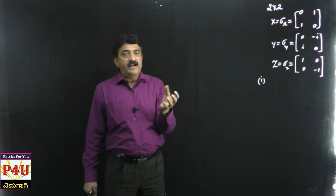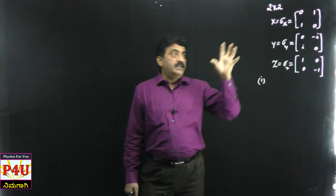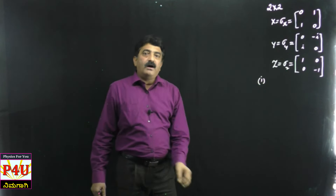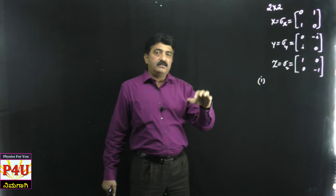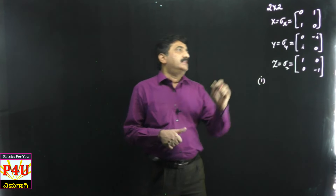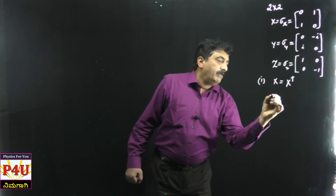Whether we write the Hermitian of X, Y, or Z, we get back the same matrix. They are Hermitian - the Hermitian of the matrix is itself. That means X is nothing but X†. Similarly, Y equals Y†, and Z equals Z†.